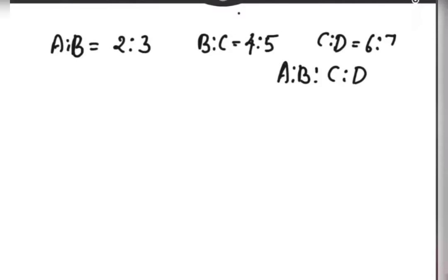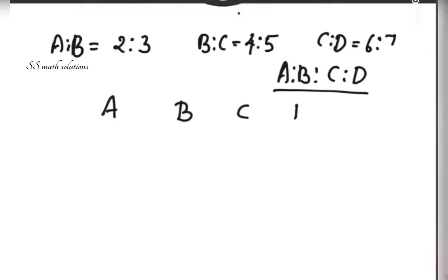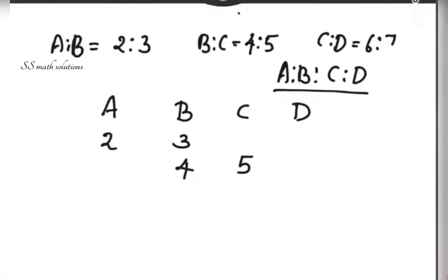As usual, we first arrange a, b, c, and d. Now a is to b — we arrange 2 and 3. Then b is to c is 4 and 5, so we keep 4 under b and 5 under c. Now c is to d is 6 is to 7, so we keep 6 under c and 7 under d.